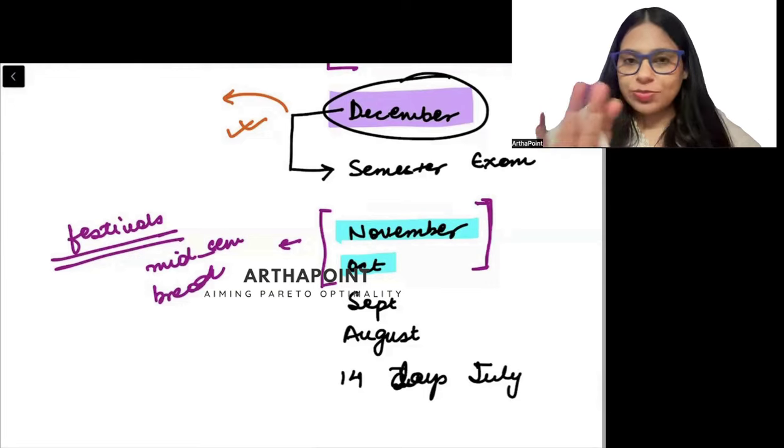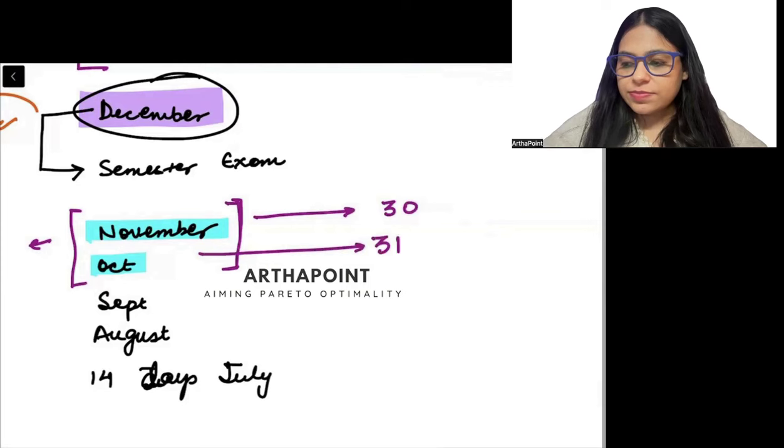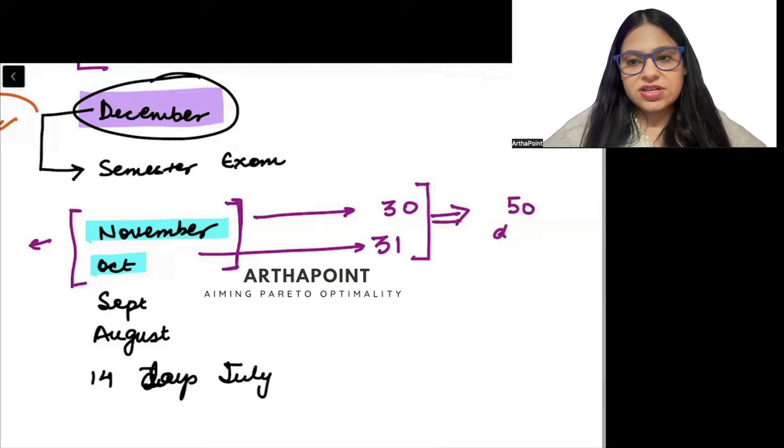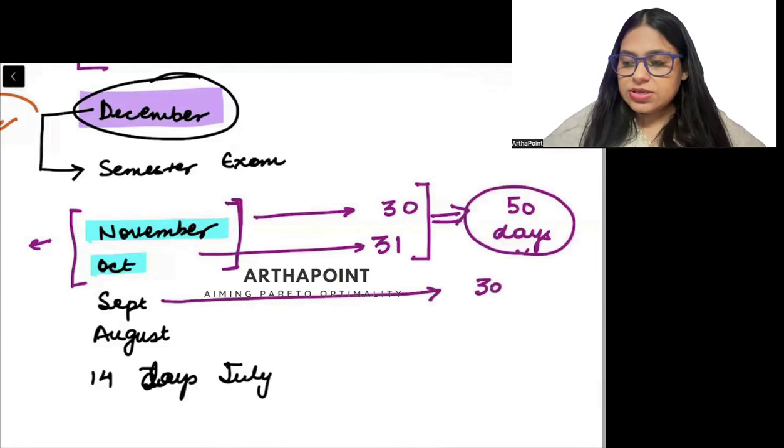Then you also have something which in Delhi is called mid-sem break. All the students who live in Delhi are not from Delhi, they go back to their hometowns and nobody studies. So I am expecting that in November and in October, if I actually count the number of days, it is only 50 days. Effective study will be possible for 50 days - more generously I am telling you 50 days.